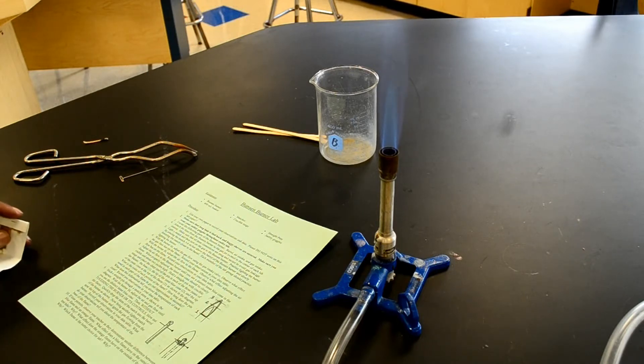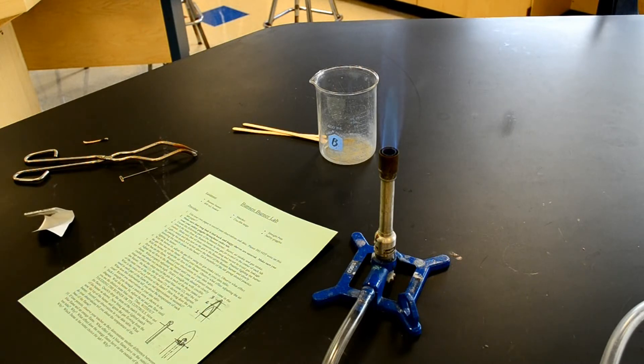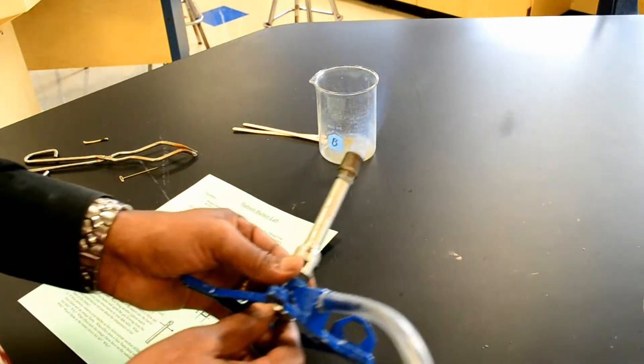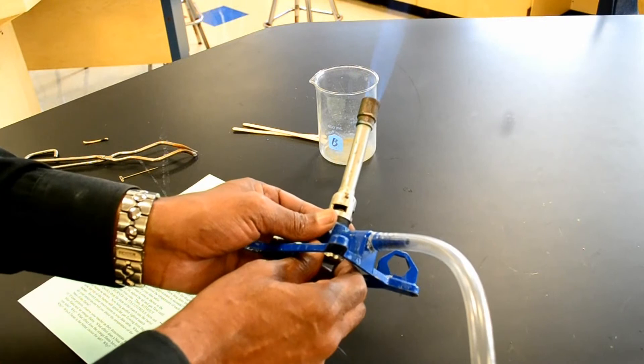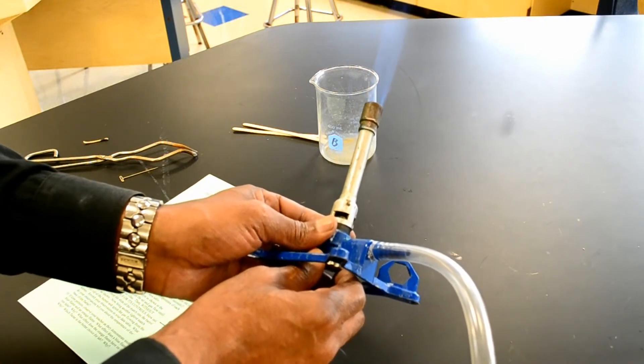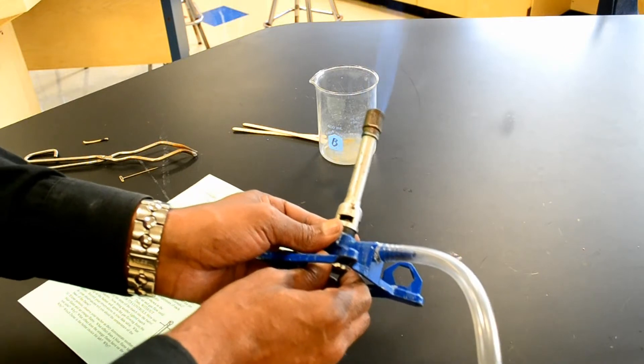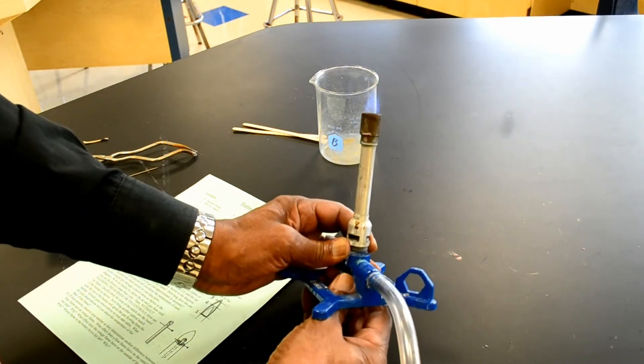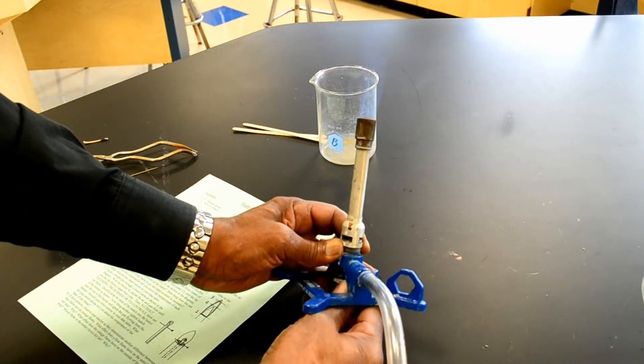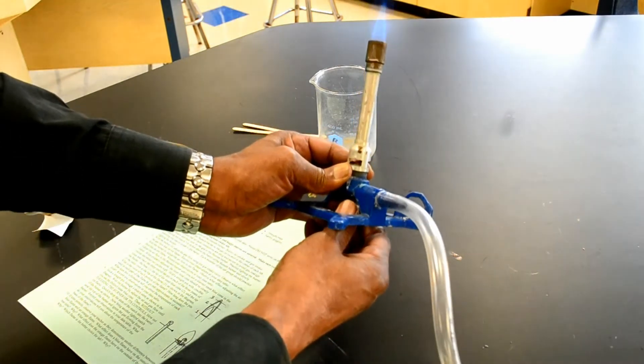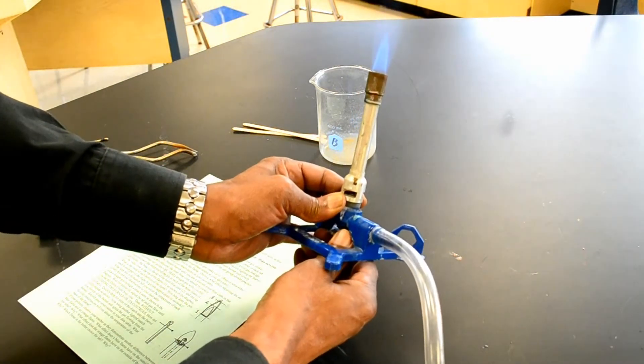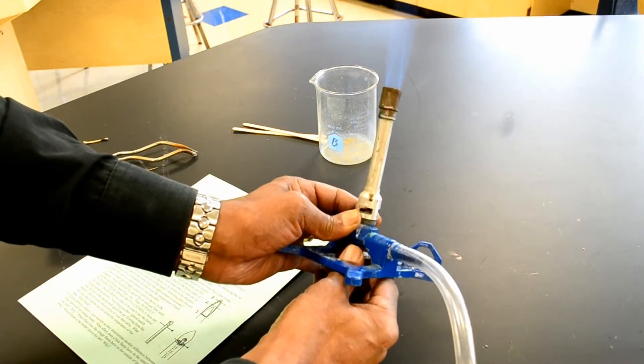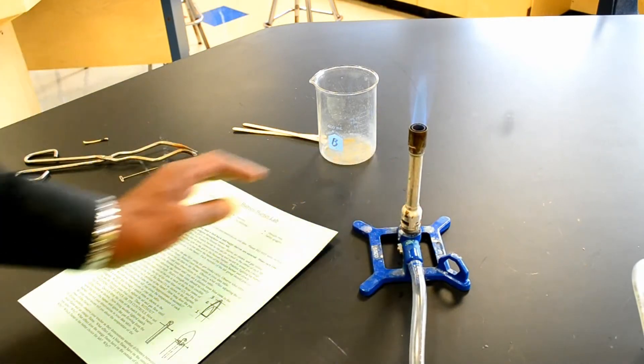Then it says, with the burner lit, adjust the gas flow using the gas intake valve. Now the gas intake valve is on the bottom. It's called the spud. Observe the effect the gas flow has on the flame. Making it really tight, you see the flame will go smaller, or the flame will go up. As I tighten the valve, the flame gets smaller. As I loosen the valve, the flame gets taller.